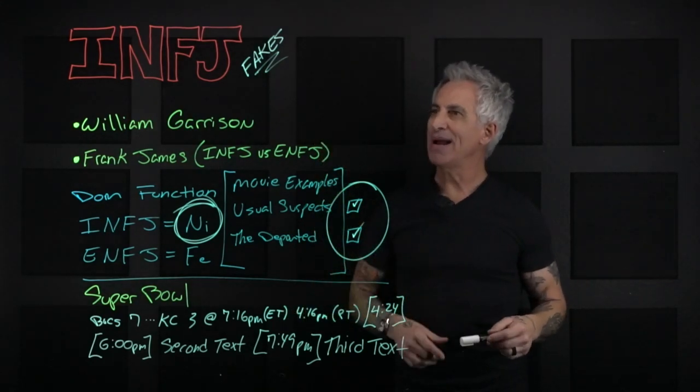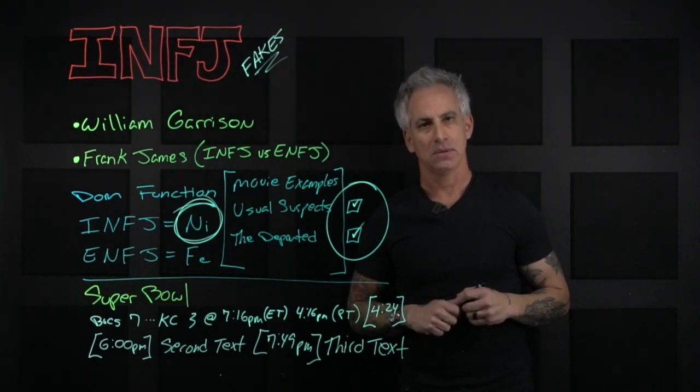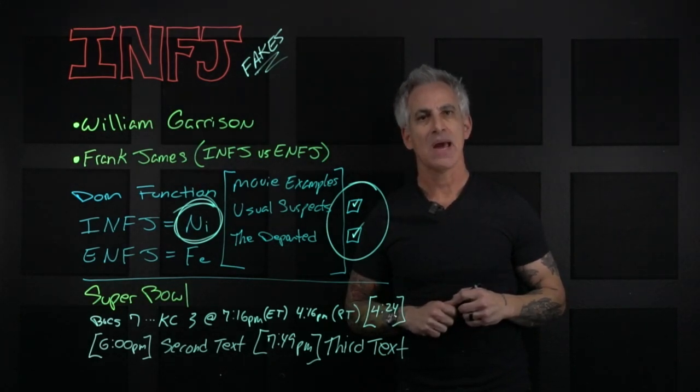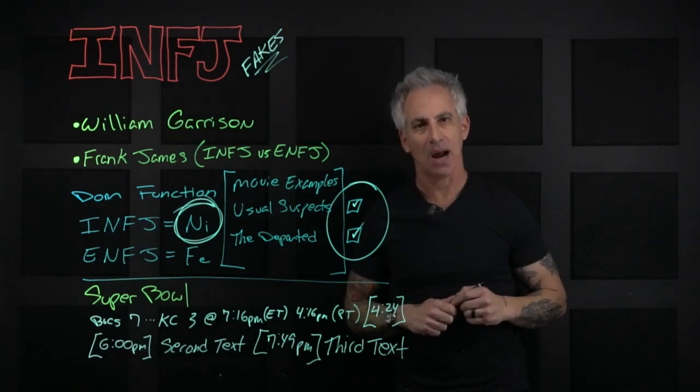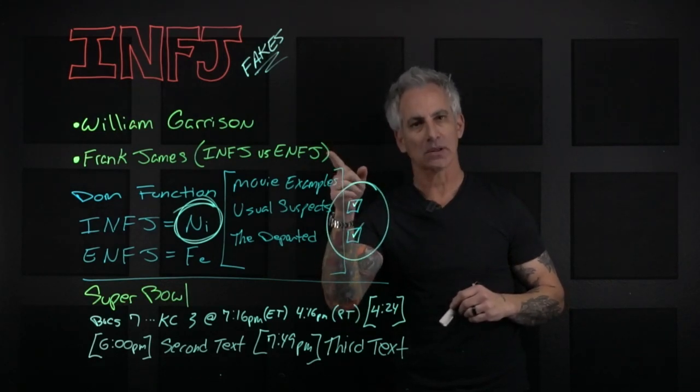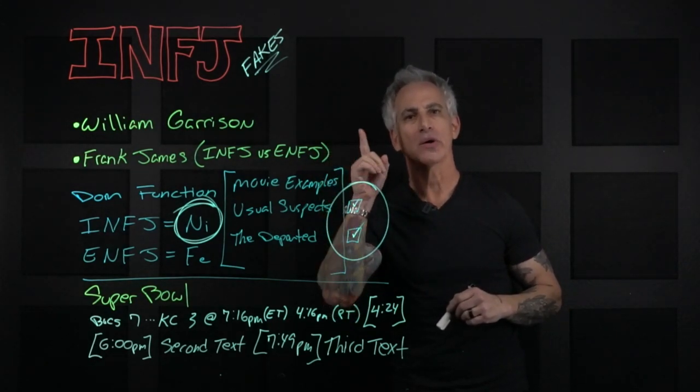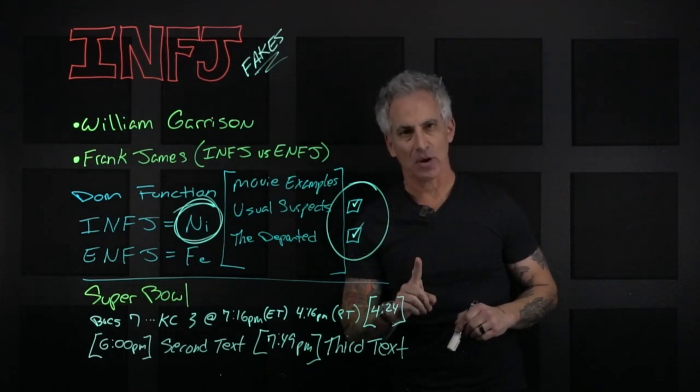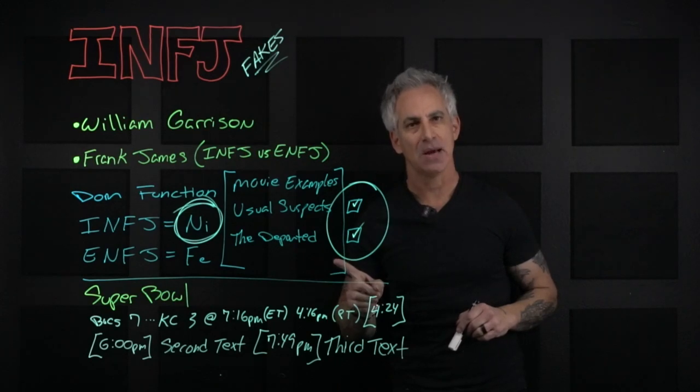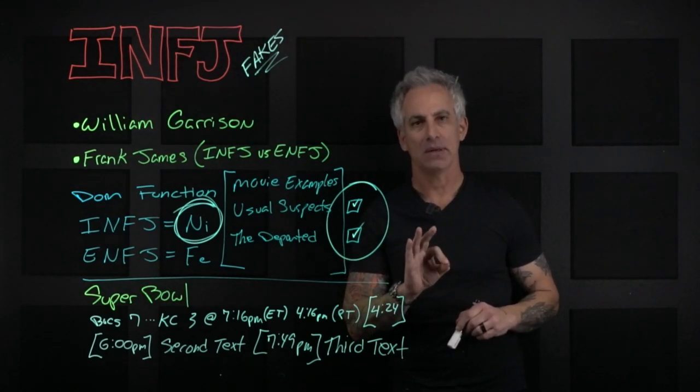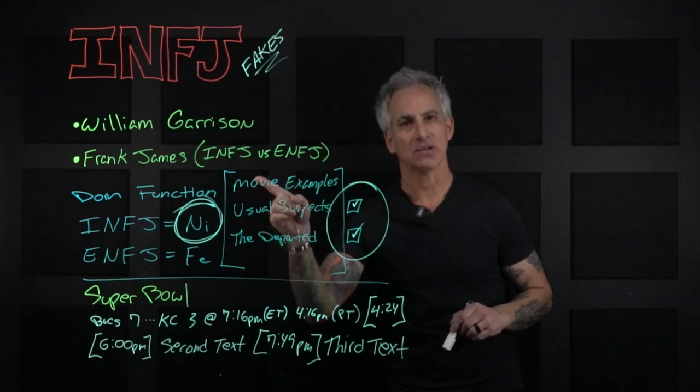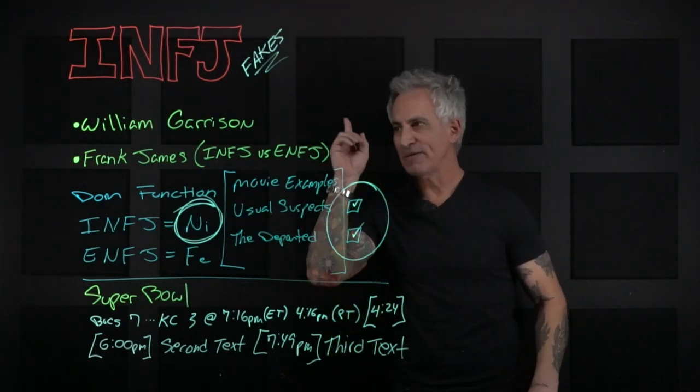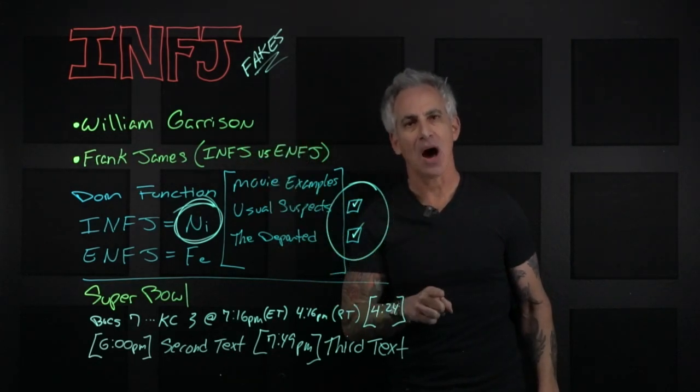Now, let's get back to INFJ fakes. Frank James is 100% not an INFJ. And proof that he is not an INFJ. And if William Garrison, you are claiming INFJ, neither are you. Because an INFJ would never, and I repeat, never send that first text and absolutely would never reference someone else's information.